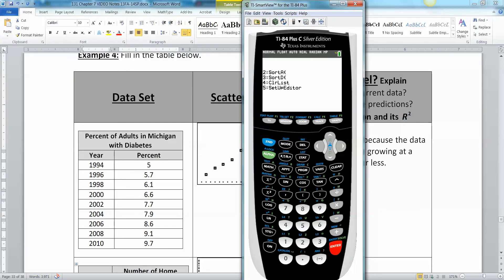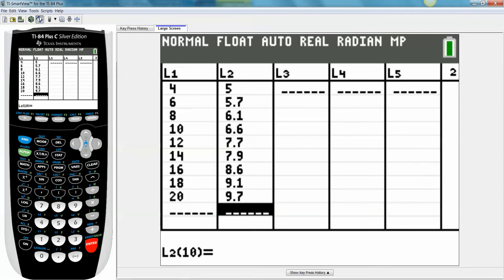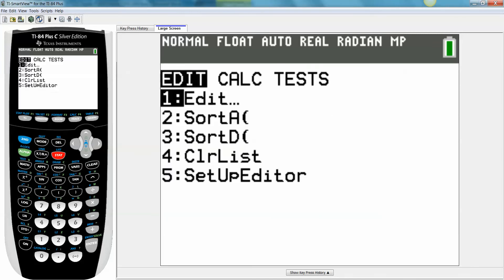So then we're going to find that model and find the function and its R squared value. Let me grab the calculator. You can see the years there. I'm going to type in what would probably make the most sense is to make 1990 my starter year. So if I go to stat, edit, clear out the old, and then I'm just going to type 4, 6, 8, 10, 12, 14, 16, 18, and 20.